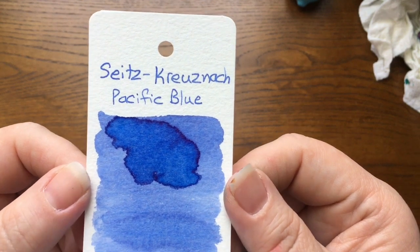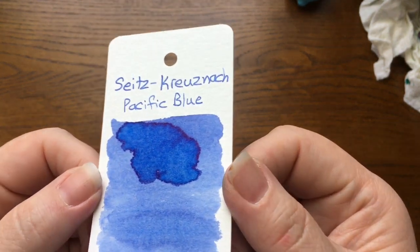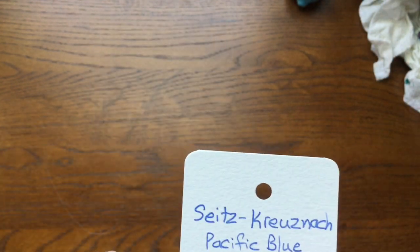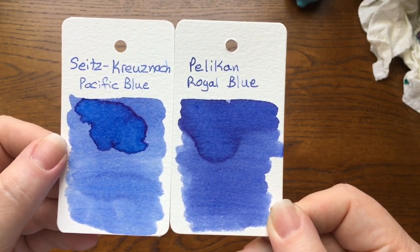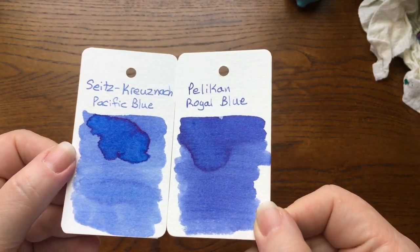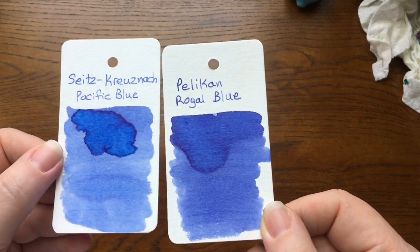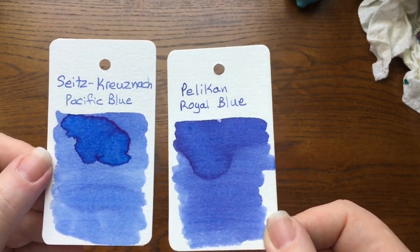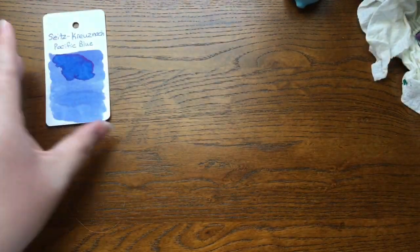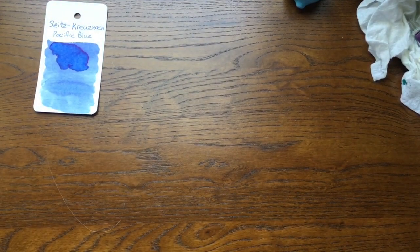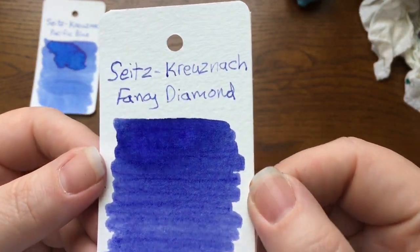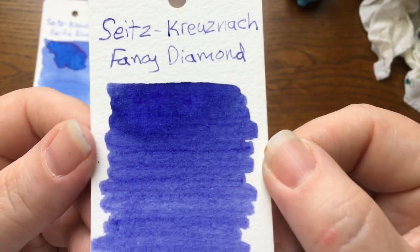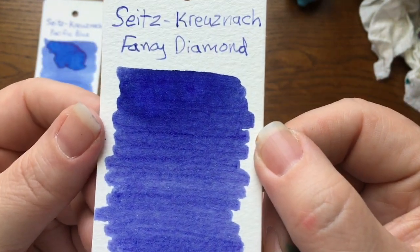Here is Pacific Blue. A nice soft blue with some pretty red sheen around the edges. And, let me see, where is my Pelican Blue? I don't think they're quite the same. I think the Pelican Blue is darker. And a tiny bit of sheen, but there's more sheen on this one. So, I don't think Pelican has just re-bottled their ink for Sitz Cruise Knock. But I still wonder who made these inks. Next up is Fancy Diamond, which is a lovely purple. It looks like it has some nice shading, but no sheen. Just a nice deep purple.